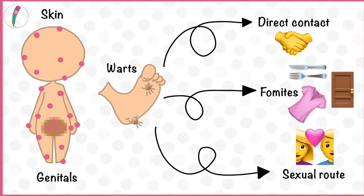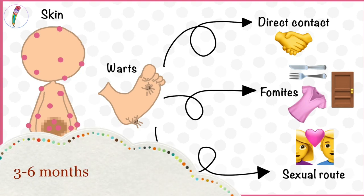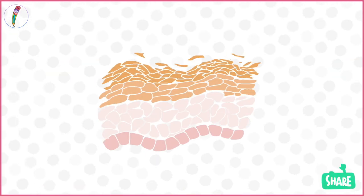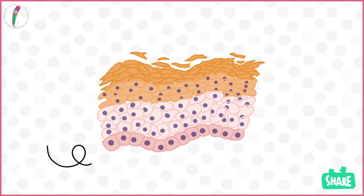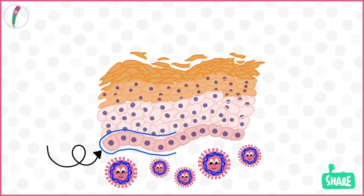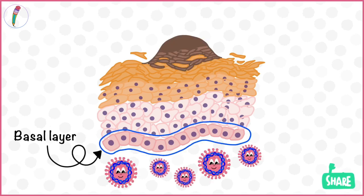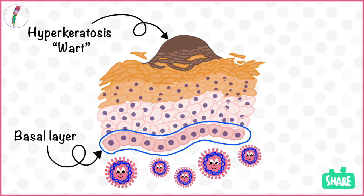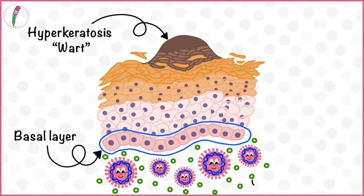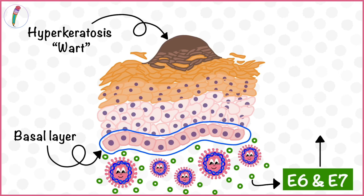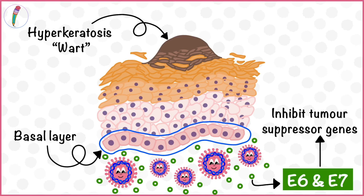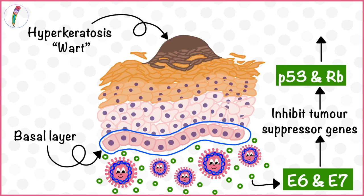After contracting the virus, it can take about 3 to 6 months for presentation of the disease. Human papilloma virus affects the basal layer of the skin and mucous membranes, causing hyperkeratosis or wart formation. HPV makes proteins called E6 and E7, which inhibit tumor suppressor genes P53 and RB respectively. This can result in malignancy or can cause cancer.